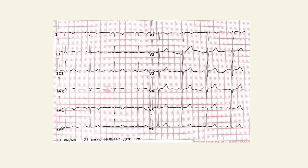Look at the QRS complex at the limb leads. We can see right axis deviation. Look at the QRS complex at lead 1 — in a normal situation we would expect a different complex. This is an ECG of a young woman, and this is not a normal complex.